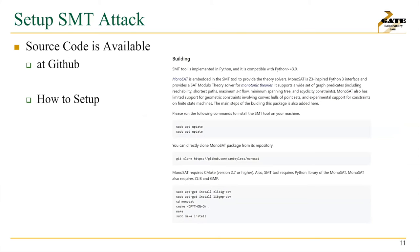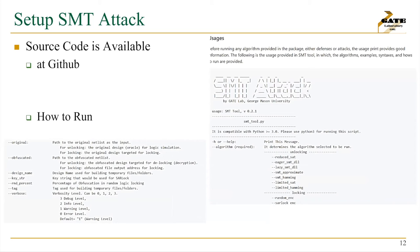The source code for the SMT attack is now available on the Gates Laboratory GitHub. We recently updated it with more detail on setup, building the code, and usage. It is built on top of the MonoSAT solver, which is a Z3-based SMT solver. Many setup steps are related to configuring MonoSAT as well. Once built, you can use the SMT attack tool on your system. We also provide comprehensive usage documentation covering the algorithms supported and available options.